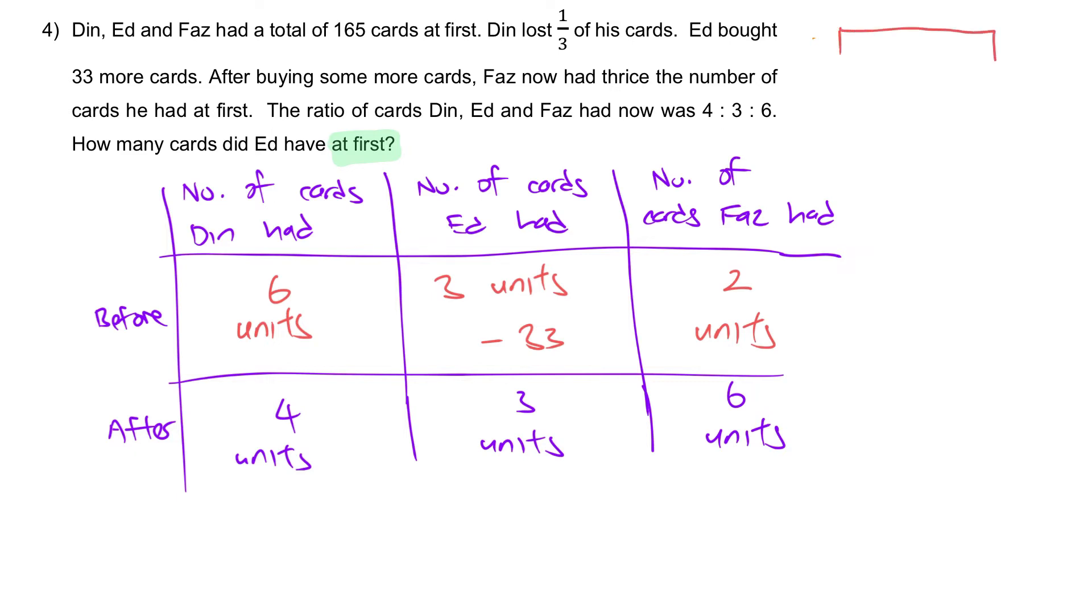If you want to do it in a model form, you can always draw it out regarding Dean's card. So, at the end, Dean had 4 units. And this is after losing 1 third of his cards. So, we can group this into 1 third. And this is the second 1 third.